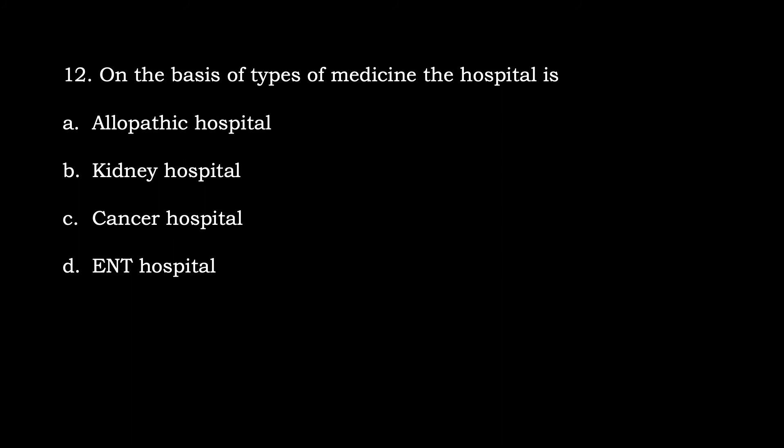Question number twelve: On the basis of type of medicine, the hospital is classified as what? Options are: A) Allopathic Hospital, B) Kidney Hospital, C) Cancer Hospital, D) ENT Hospital. According to the medicine type classification of hospitals, the correct option is A, Allopathic Hospital.